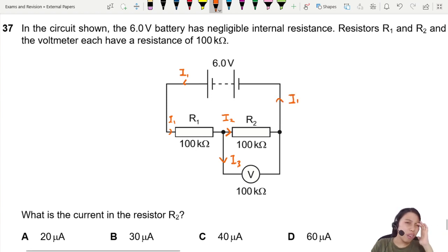If we need to find current in resistor R2, we will need two other things, because V equals IR. You want to find current - this is one method - you need to find V and R as well. Or you have to use Kirchhoff's law, Kirchhoff's first law, which is a bit longer. We'll try our best.